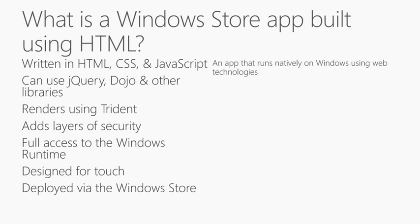There is a 70-30 split — we keep 30% and you keep 70% of your hard-earned revenue. And if you make more than $25,000, it turns into an 80-20 split where Microsoft keeps 20% and you keep 80%, which is really, really important. No other platform does that at that level.